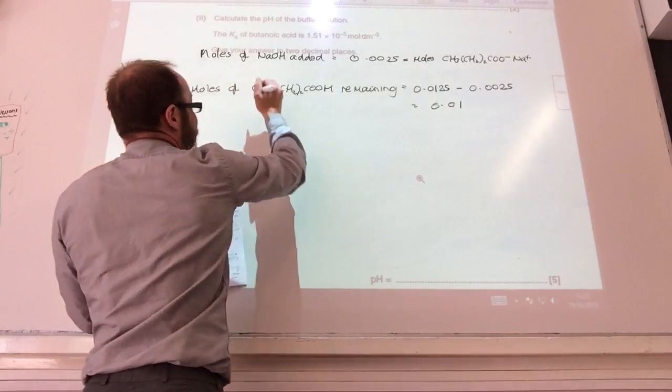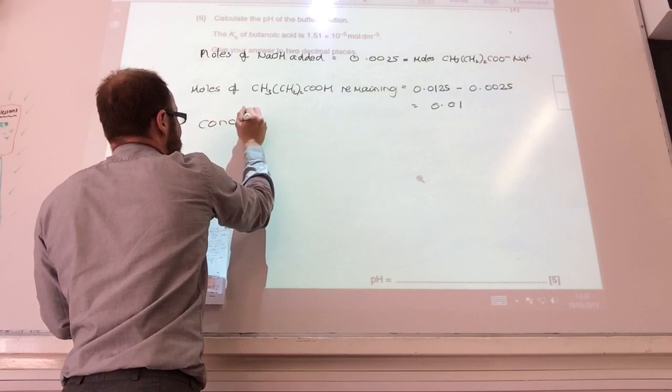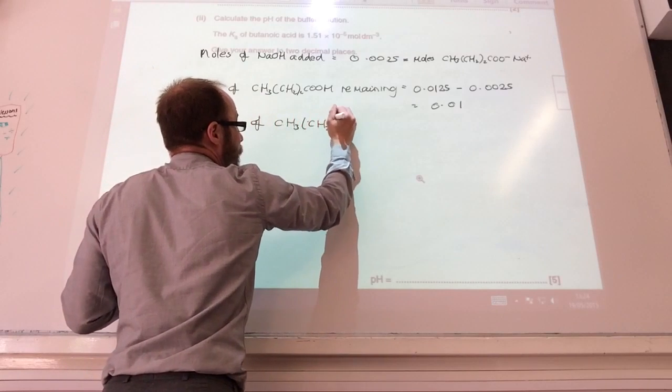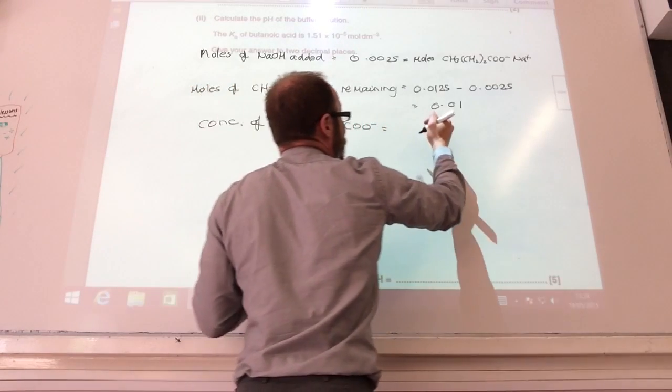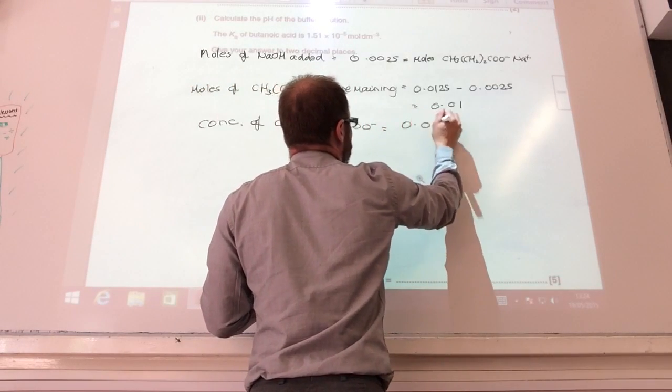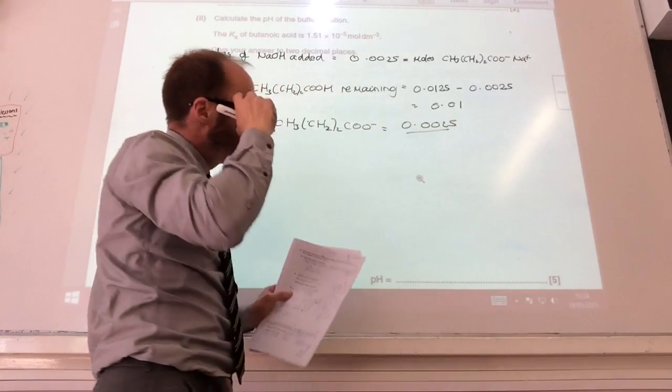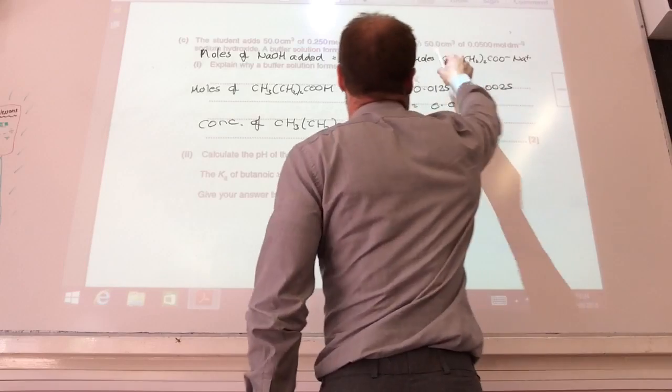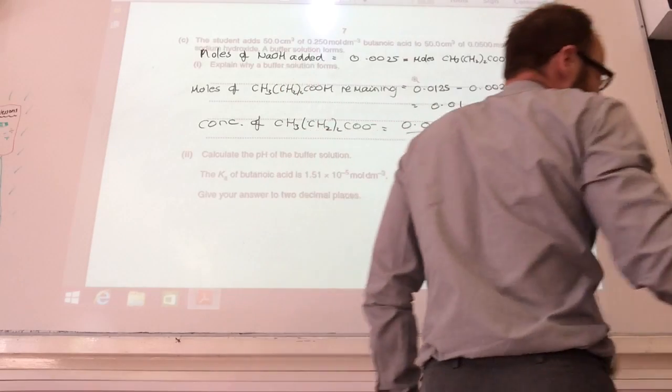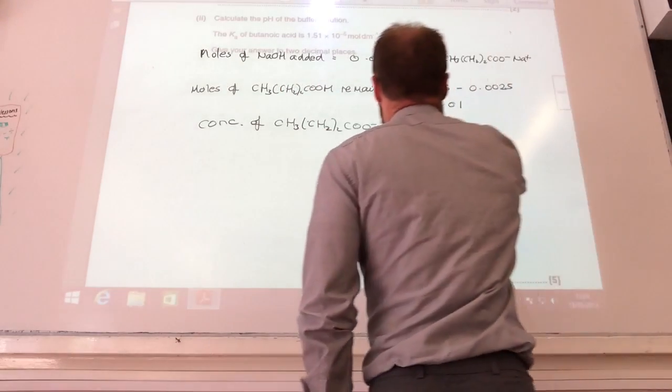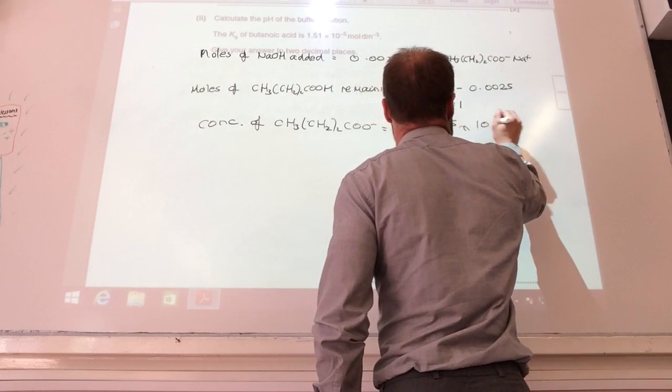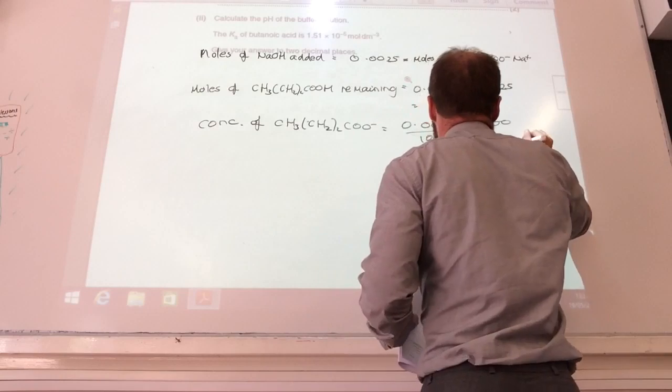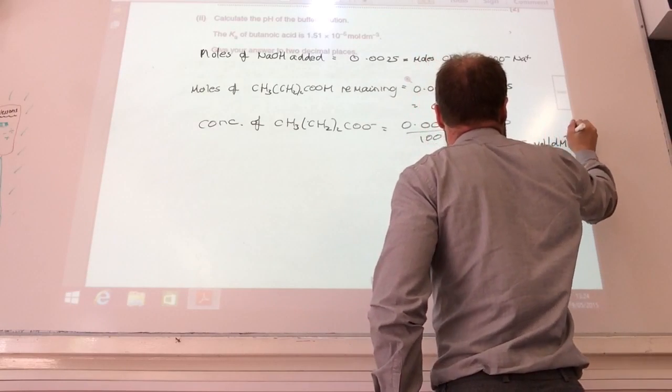I now need to work out my concentrations. So concentrations of sodium butanoate is equal to the number of moles divided by the volume it is in. What volume is it in? Well, the volume of my buffer, I've got 50 of that and 50 of that. Therefore, it's 100 divided by 1000. So that is going to equal 0.025 moles per decimeter cubed.